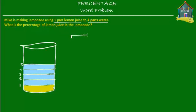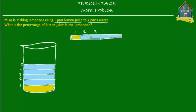Now let's put this on a model diagram. If we have a model diagram that represents the lemonade, there are five units in the lemonade — five parts in the model diagram. Out of those five units, one unit is lemon juice and four units are water. So the lemonade has five parts, of which one part is lemon juice.